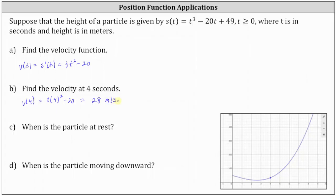Next, we're asked to determine where the particle is at rest. The particle is at rest right where it changes from moving downward to moving upward, or where the velocity is equal to zero. So on the graph, the point where there's a horizontal tangent line is where the particle is at rest at that instant.